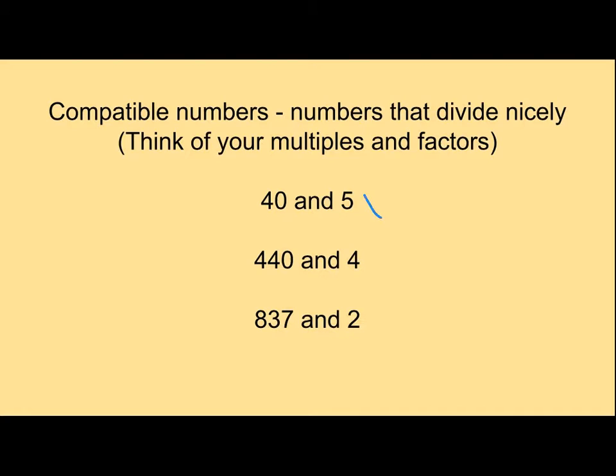So 40 and 5, they are compatible because there are 8 groups of 5. That works nicely. 440 and 4 works nicely because we have 44 and 4. And so then we know by adding in another place value, that's going to get along nicely.